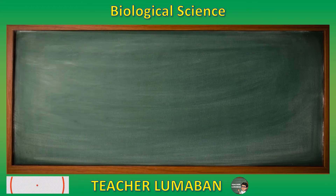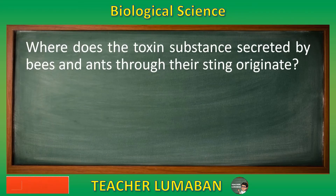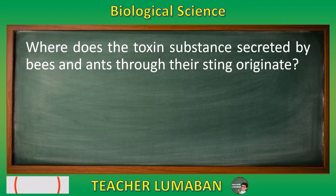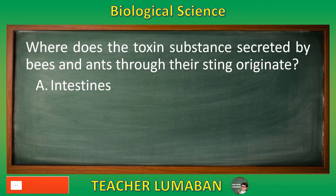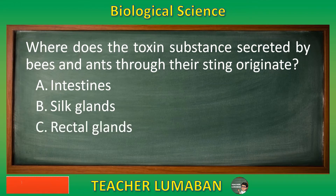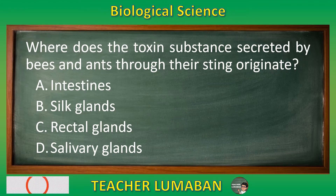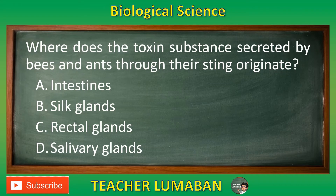Where does the toxin substance secreted by bees and ants through their sting originate? Letter A: Intestines. Letter B: Silk glands. Letter C: Rectal glands. Letter D: Salivary glands. Choose the suitable answer based on the given choices in 5 seconds.